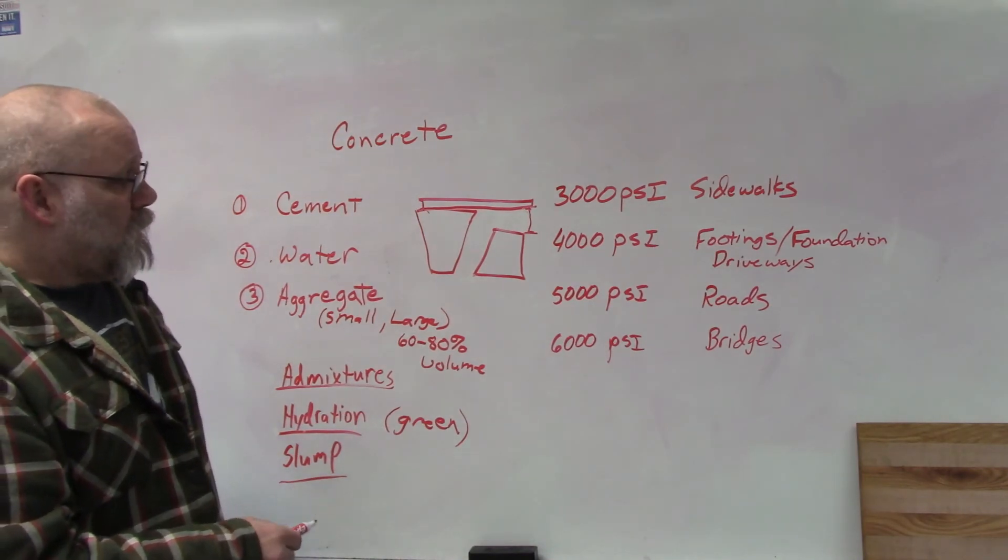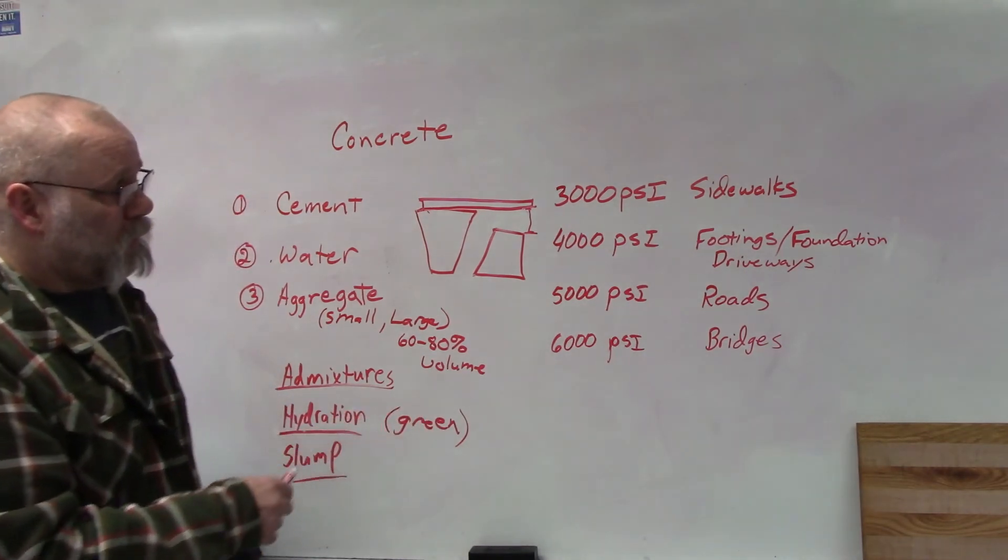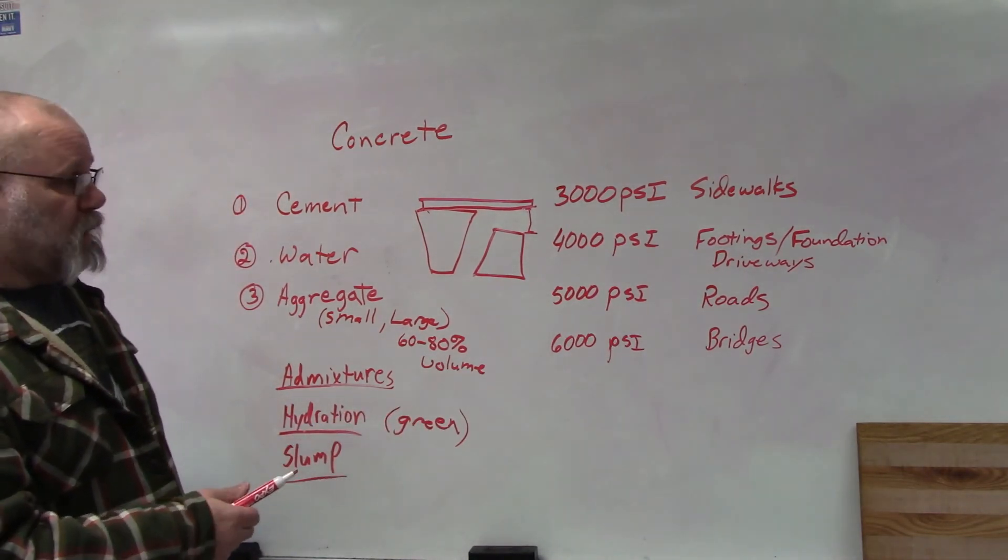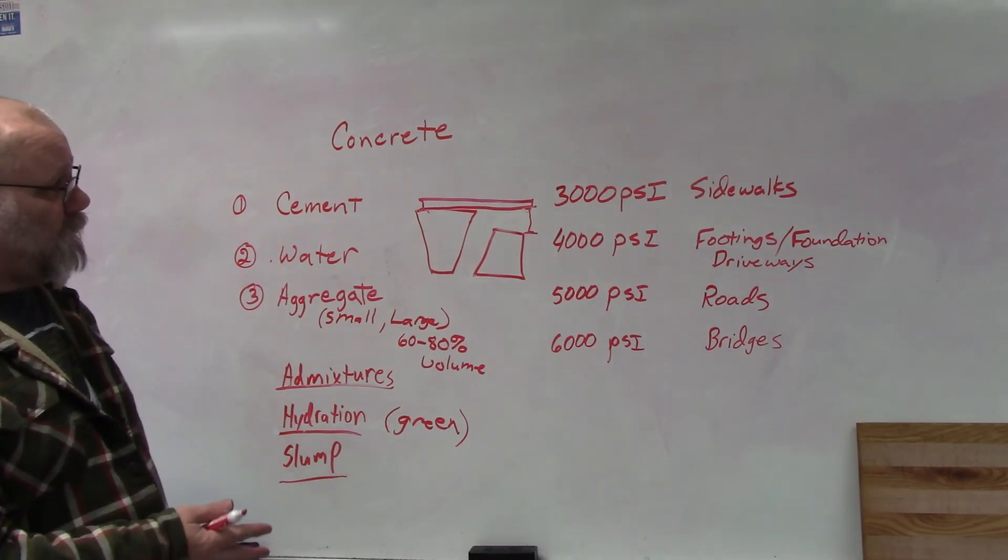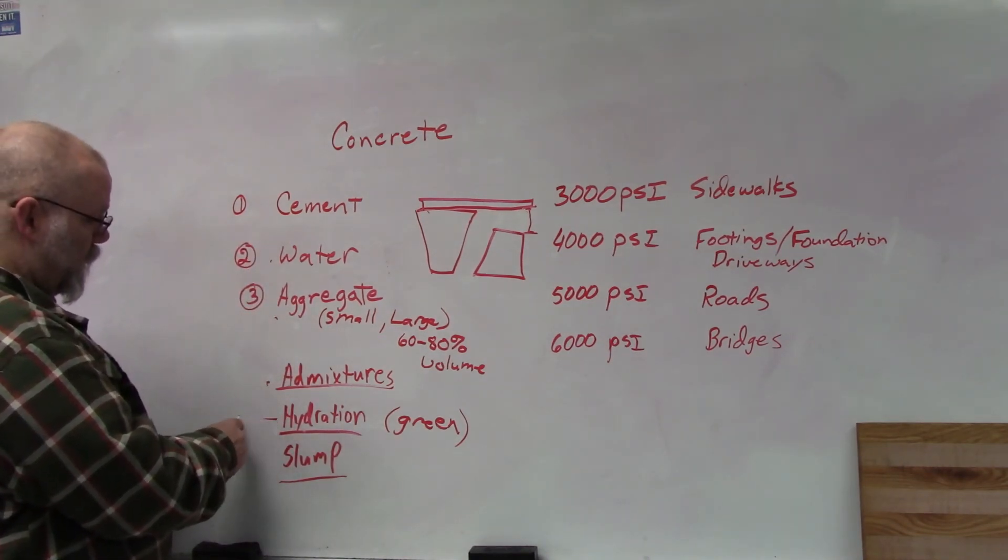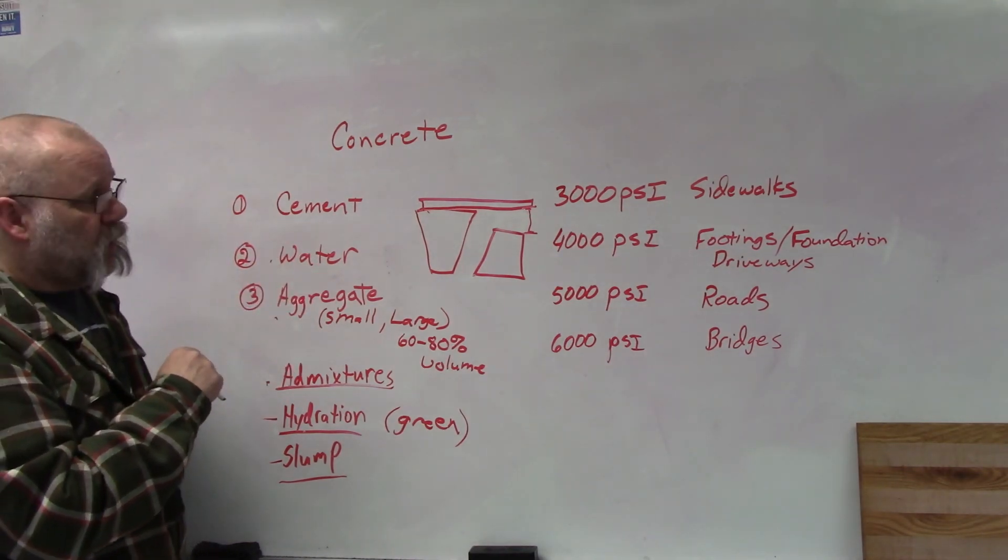So basically, this is a quick overview of concrete - the basic ingredients of concrete, what admixtures are, what hydration is, what slump is, and then how many PSI that you would need to pour - or place, the correct term is place concrete - whether it's sidewalks, footings, foundations, roads, or bridges.